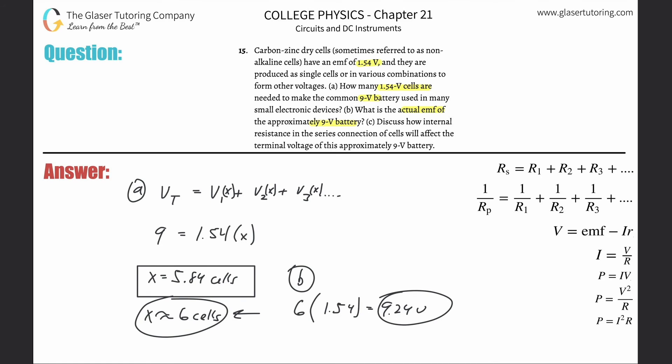And then letter C: Discuss how internal resistance in the series connection of cells will affect the terminal voltage. So internal resistance will reduce it. When you link all these cells together, they're connected via wires and there's resistance in those wires. So this is like the theoretical max; it'd be a little less, about 9 volts. Thank you guys for tuning in. Appreciate it. Please remember to help us out and subscribe. Be well.